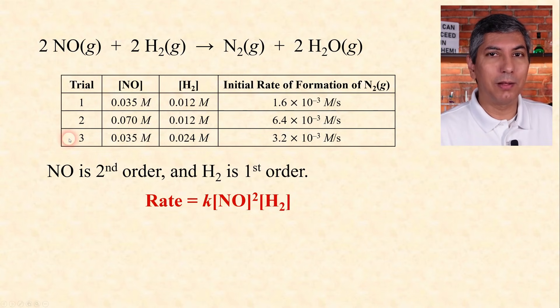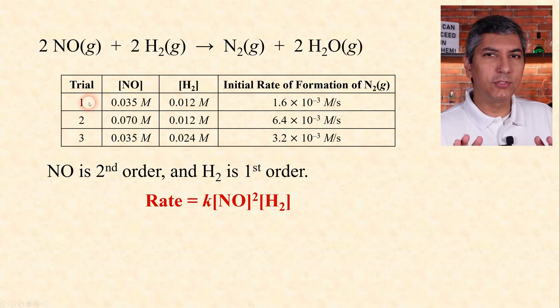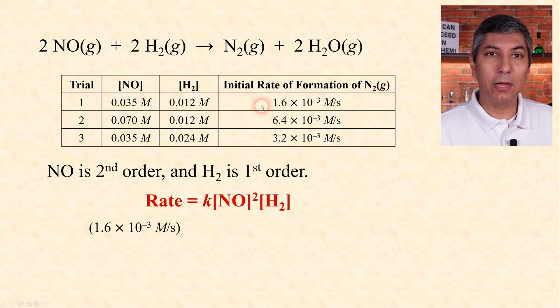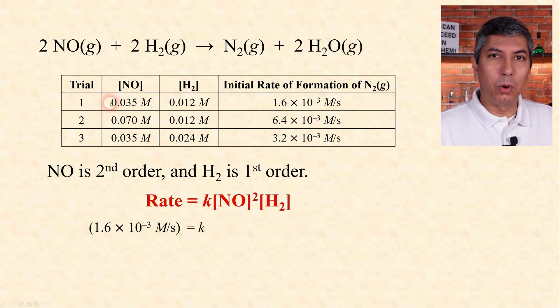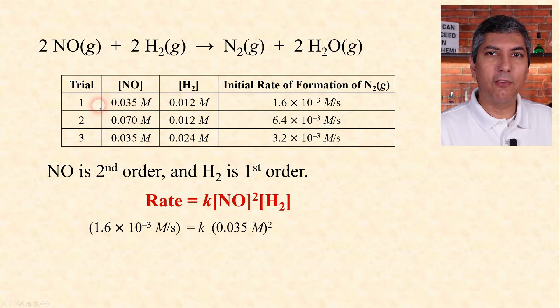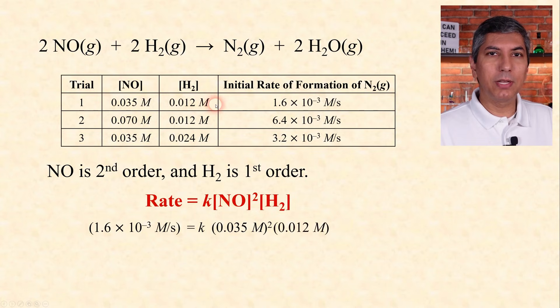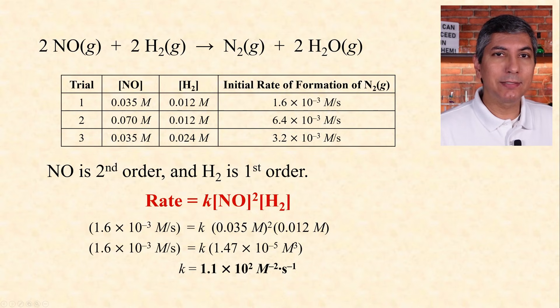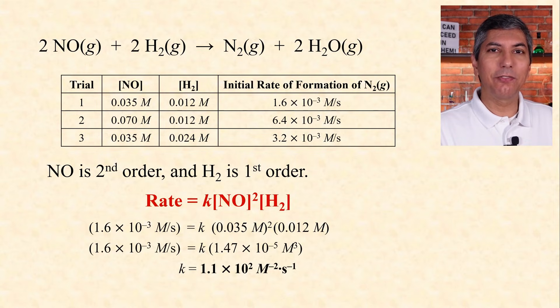We can use the rate law to calculate the rate constant — all we have to do is take any trial and plug the data in. Using trial 1 as an example: the rate is 1.6 × 10⁻³ M/s, [NO] is 0.035 M (squared, since it's second order), and [H2] is 0.012 M. After some multiplication and division, we find that the rate constant K is 1.1 × 10² M⁻² s⁻¹.